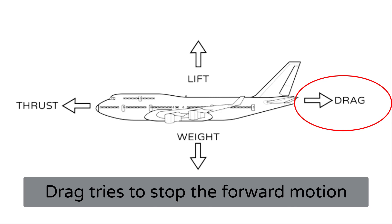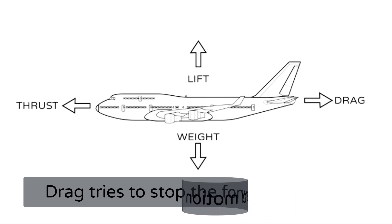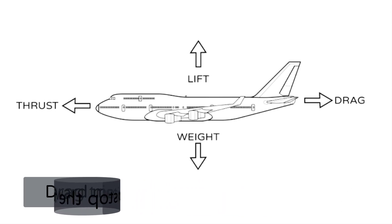There are many subtypes of drag, which are categorized depending upon the shape, construction, surface smoothness of the aircraft structure, and the disruption of airflow around the aircraft. Reducing drag is critical to improving fuel efficiency and overall aircraft performance.